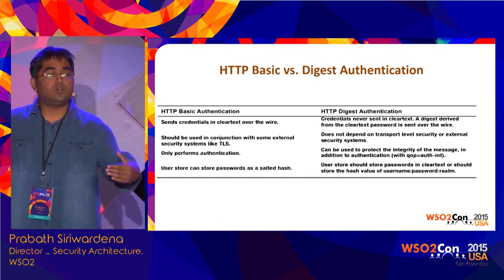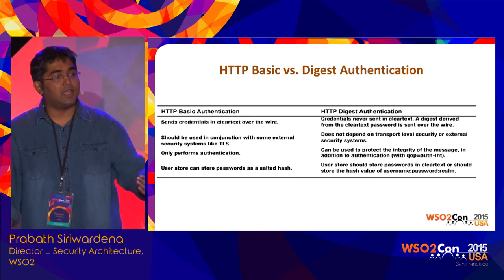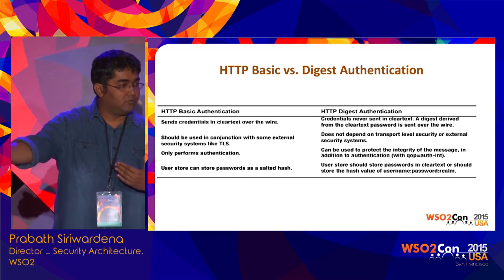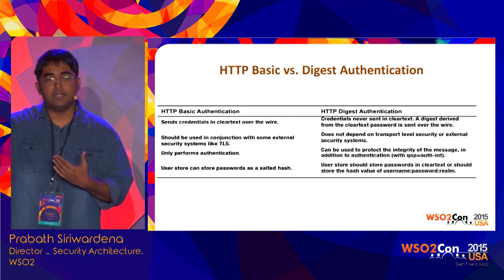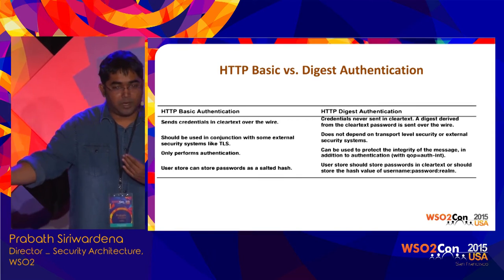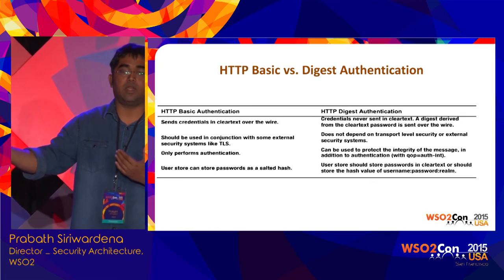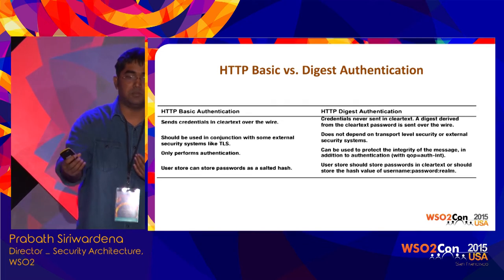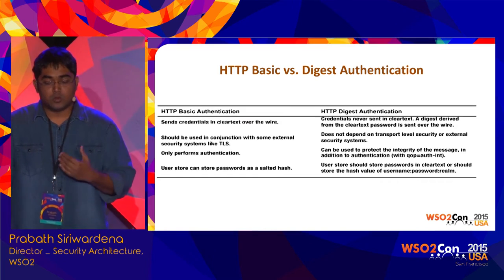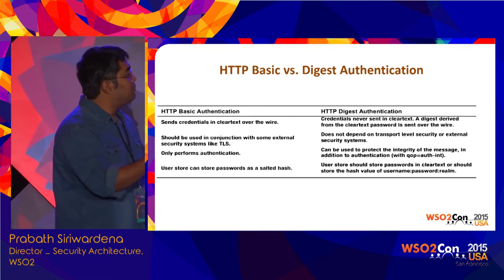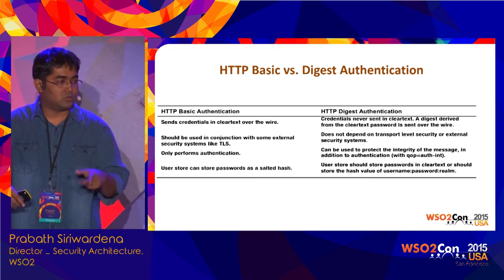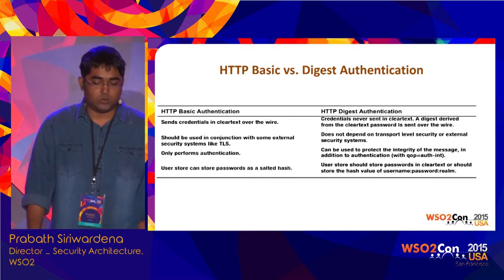With digest authentication, if we want to validate this hash, we need to store the password on our side — we cannot store the hashed password at the user store. It should be clear text, or it can be encrypted. But even if you encrypt it, whoever owns the encryption key can decrypt and see the password. Alternatively, you can hash the username, password, and realm and store that hash in your user store. To support digest auth, it has to come from the identity store too.